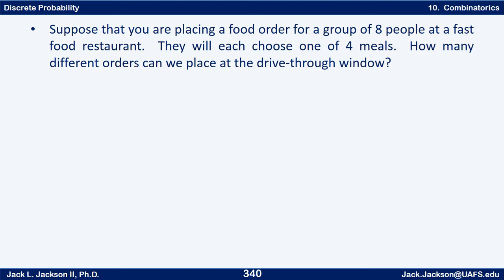So you might have two number one meals, two number two meals, two number three meals, two number four meals, or they could be mixed up different ways. You don't have to choose them all — maybe nobody chooses a number two meal. You're choosing from N equals four meals, and K people are choosing. Notice when you drive up to the drive-through window, the order is the same as far as they're concerned regardless of who ends up getting those meals. They just want to know how many of each you're ordering — you can sort out who gets them later.